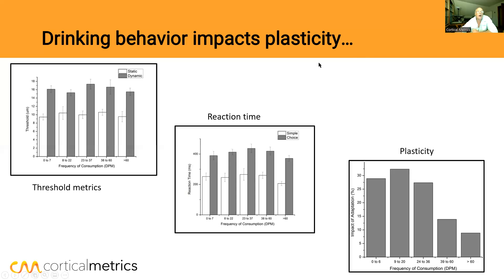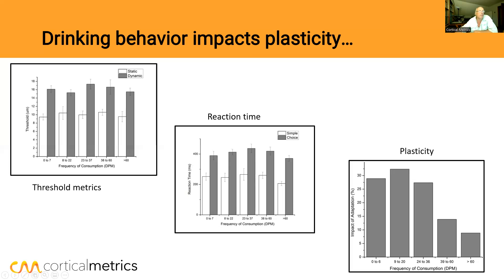Institutional review boards gave us some difficulty about questioning people under the drinking age about their alcohol use — they thought we were encouraging drinking, which we were not. We were simply asking about frequency of consumption: how many drinks per month? Participants drank anywhere from zero to 70, 80, or 100 drinks per month. We binned the data, and the critical threshold appeared to be over 60 drinks per month.